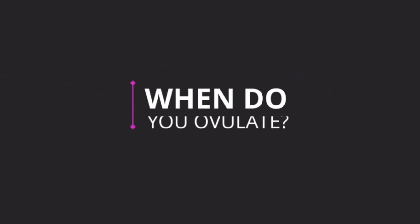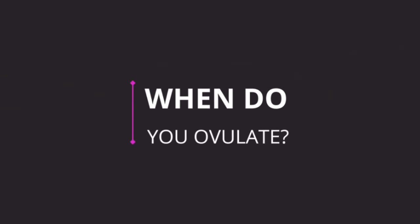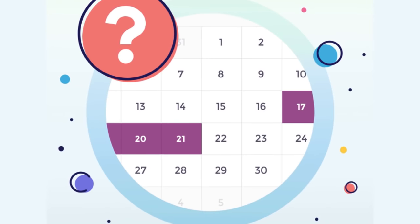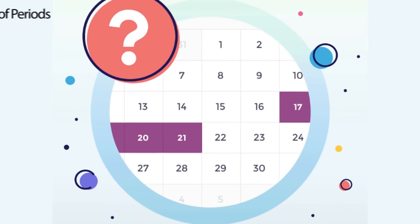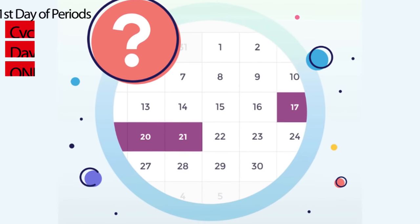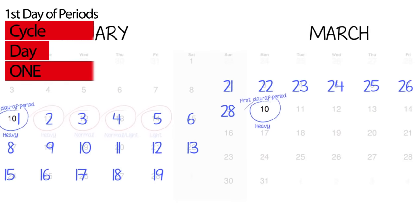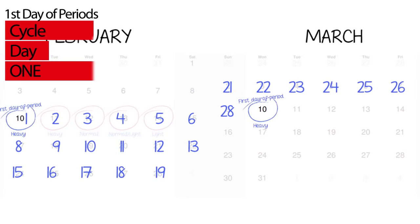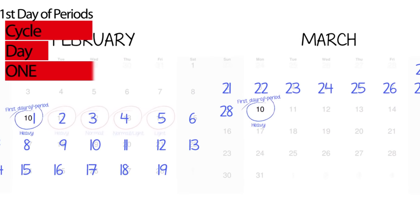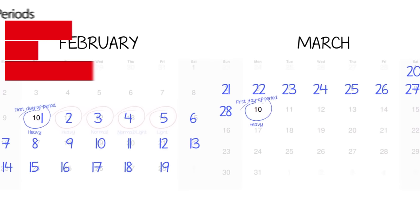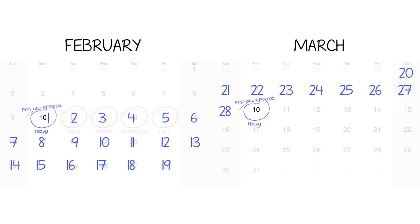When do you ovulate? The first day of a woman's period is day one of the menstrual cycle. The length of the menstrual cycle is the duration from the first day of your period, continuing up to the first day of the next period.